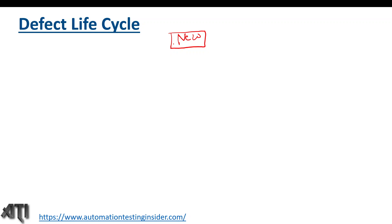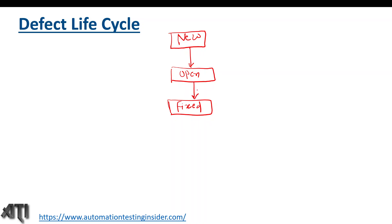After raising the defect with status 'New', we assign it to the development team. When it is assigned to a particular developer, the status becomes 'Open'. The developer works on the fix, and once the defect is fixed the status changes to 'Fixed'. They then assign it back to the testing team, and it becomes our responsibility as testers to retest the defect — so the status at this stage is 'Retest'.